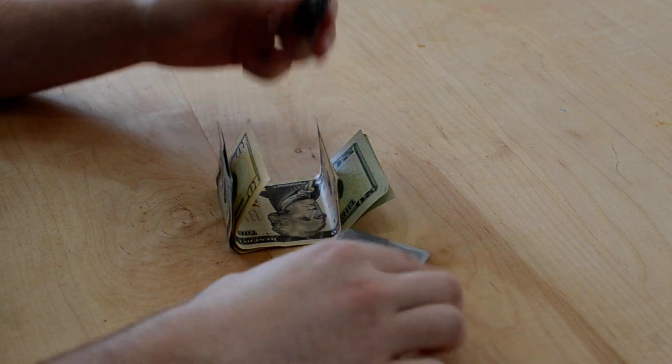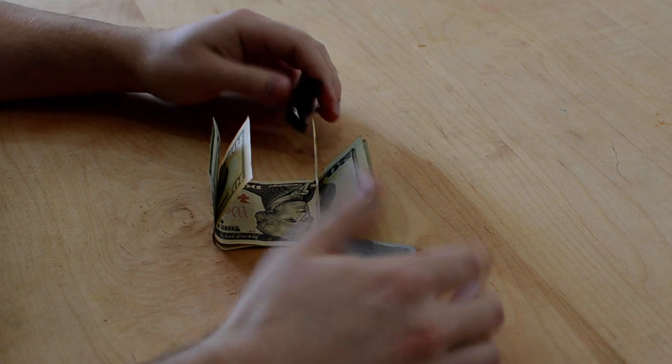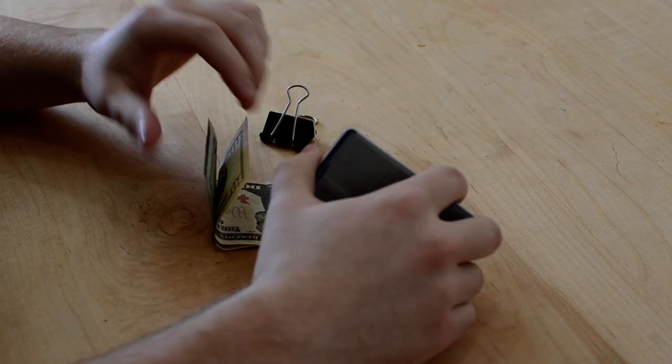Rather than say, cool, a binder clip as a money clip, that's neat, and then give up on it in a month because it's inconvenient. So I want to share how it works.